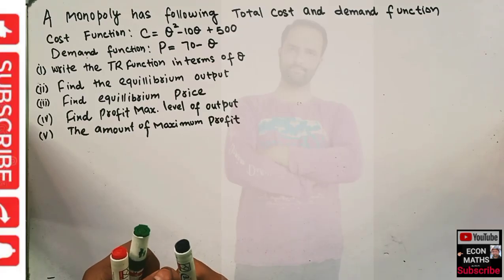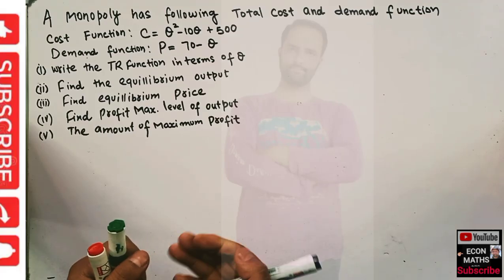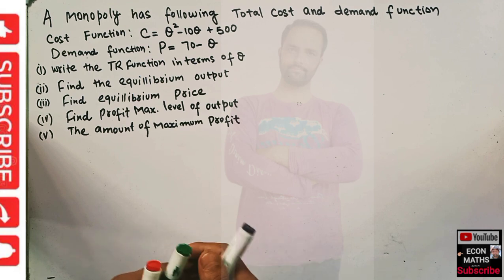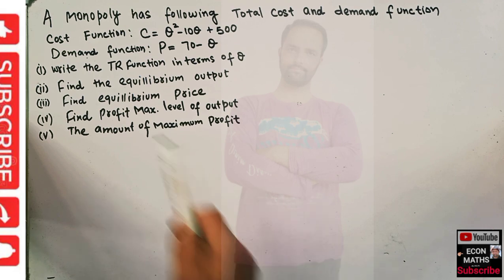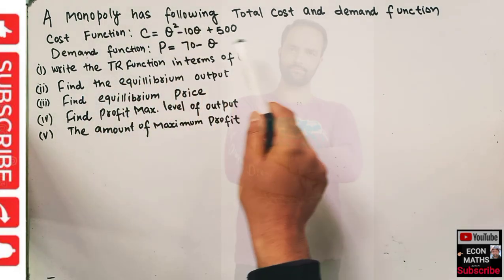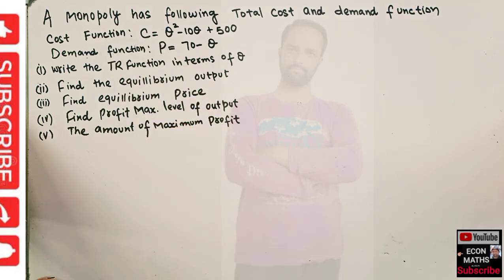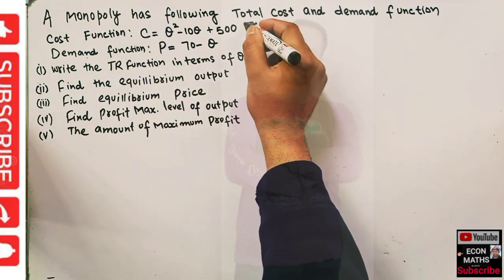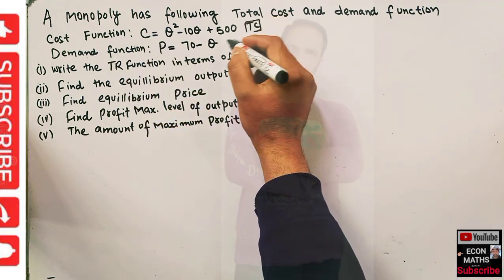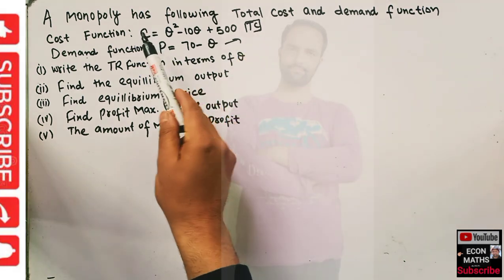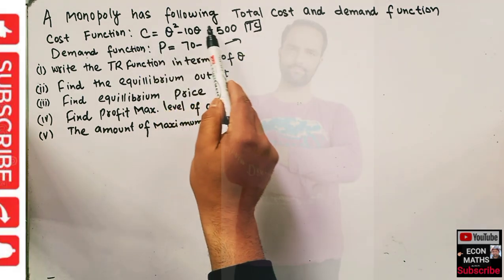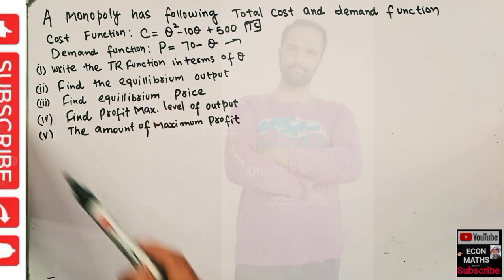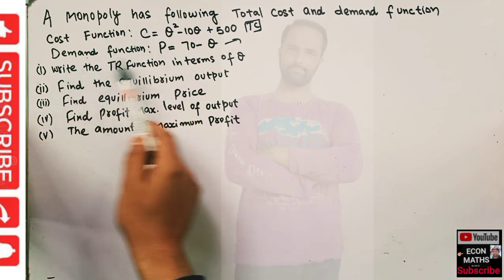In this video we will try to solve a problem on monopoly that was asked by a brother on the Telegram channel of Econ Maps. The question is like this: a monopoly has the following total cost and demand functions. The cost function is q squared minus 10q plus 500, where q denotes the quantity and c denotes the cost.